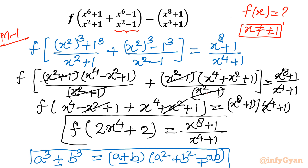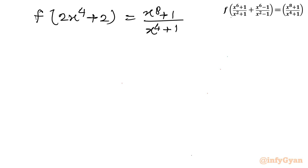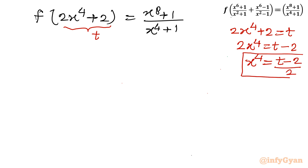Now the task is simple — we give a substitution. So I write: f(2x⁴+2) = (x⁸+1)/(x⁴+1). Let me set the bracket equal to t, so 2x⁴+2 = t. Taking away 2 from both sides: 2x⁴ = t-2. Dividing both sides by 2: x⁴ = (t-2)/2.